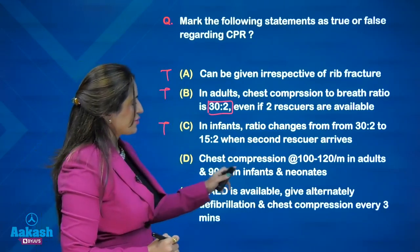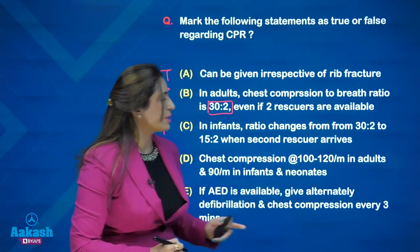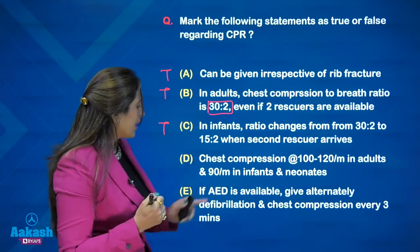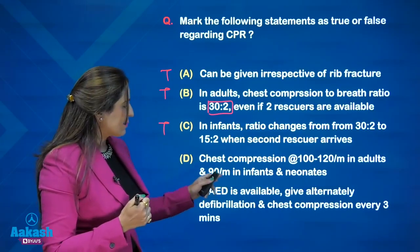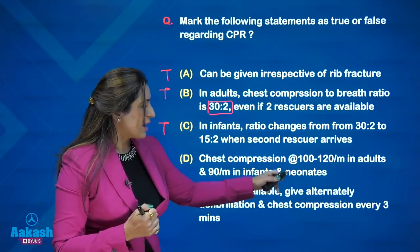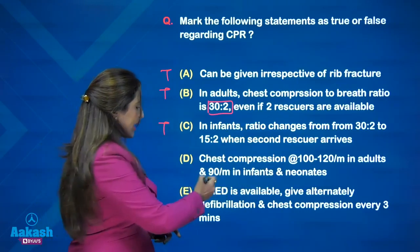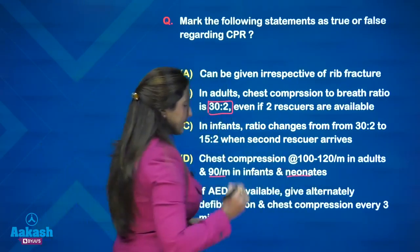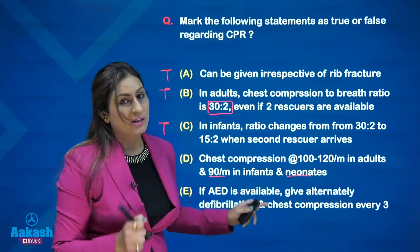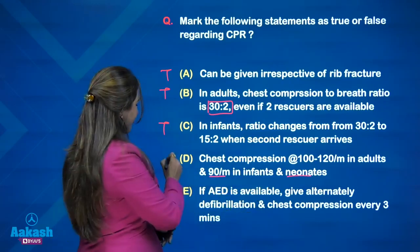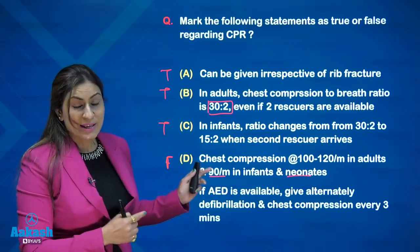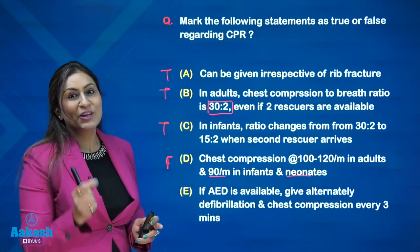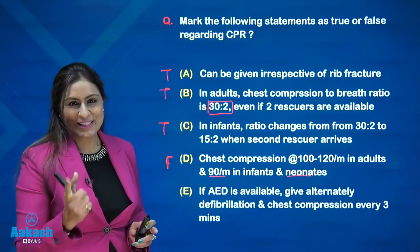Chest compression rate of 100 to 120 per minute is correct for adults. The rate of 90 per minute applies to neonates — but not to infants. So the statement that 90 per minute applies to both infants and neonates is false. This illustrates how specifically exam questions test these details.